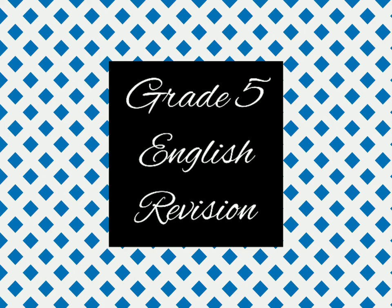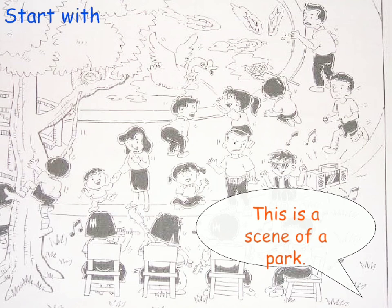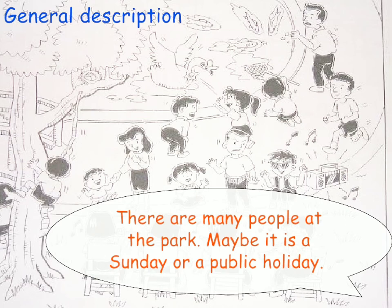Hello everyone, I hope you all are doing good. In this video we are going to revise picture description. A picture description is when you are given a picture and you need to describe it. To start describing a picture, first you need to tell which place it is — which type of scene it is. For example, in this picture you can see a park, so you can write: 'This is a scene of a park.'